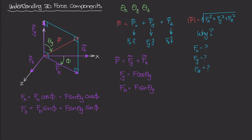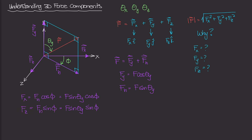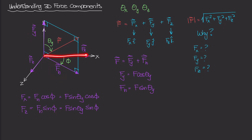That solves half the problem. We now know the values of F of X, F of Y, and F of Z. The steps are: break force vector F into components F of Y and F of H, then break F of H into F of X and F of Z. Given angles theta Y and phi, you can calculate all three components.